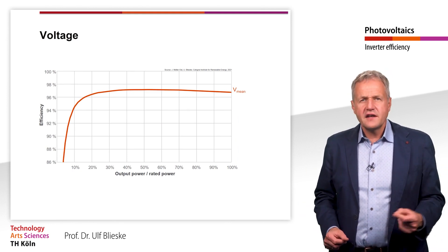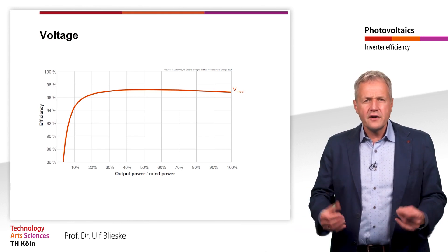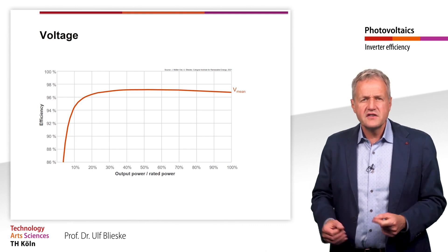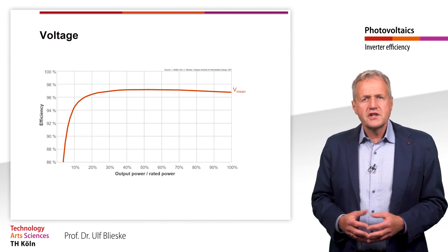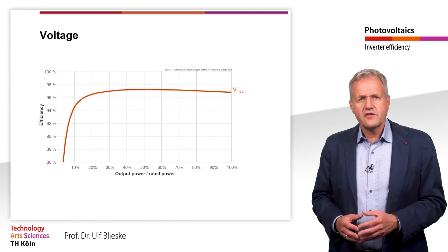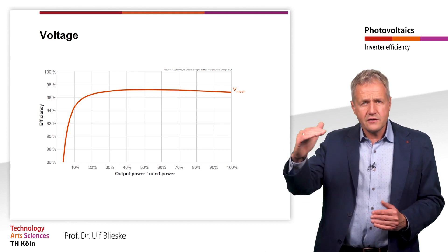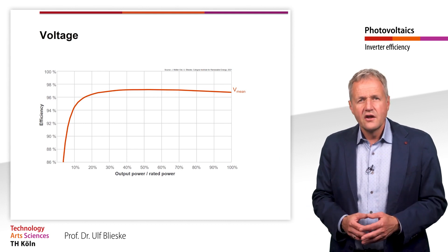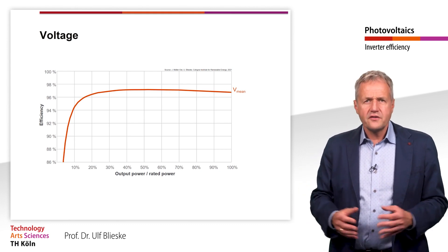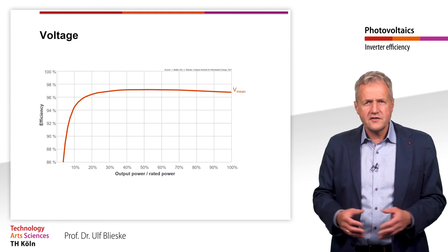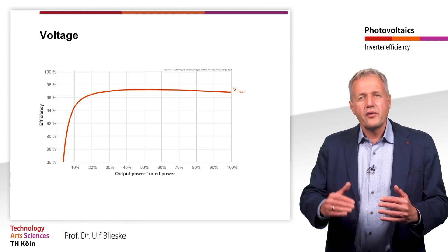A weighted efficiency therefore already says much more about the kind of average annual efficiency one can expect for a certain inverter. However, it must also be taken into account that the efficiency depends not only on the input power but also on the input voltage. The vast majority of inverters sold today are two-stage transformerless models. In the first stage, the input voltage of the PV generator is set to a certain voltage value and then converted to AC in the second stage. Conversion losses occur in both stages, and these losses also depend on the voltage.